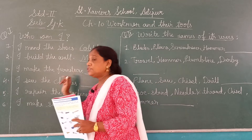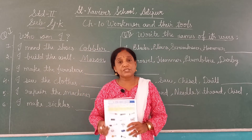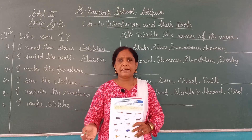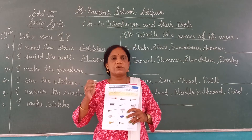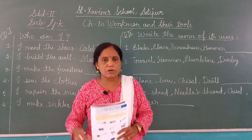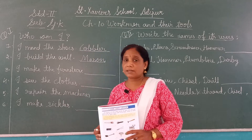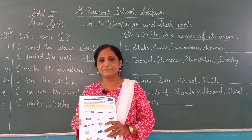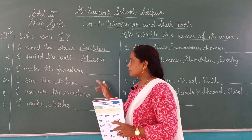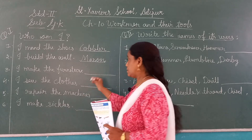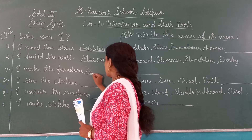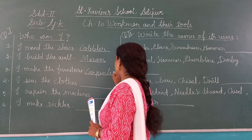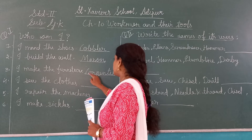I make the furniture. Mein furniture banata hoon. Furniture means table, chair, bed — all wooden items, cupboards. So who makes all of these? What do we call them? Remember — Carpenter, right? So here the answer will be Carpenter, C-A-R-P-E-N-T-E-R.